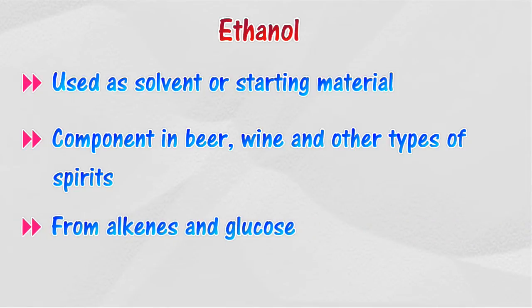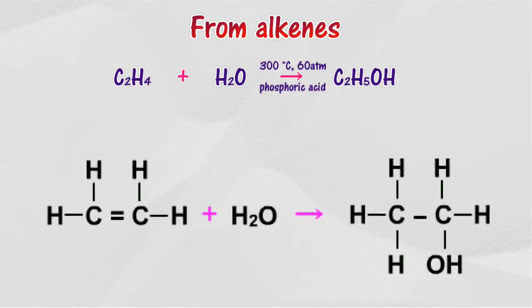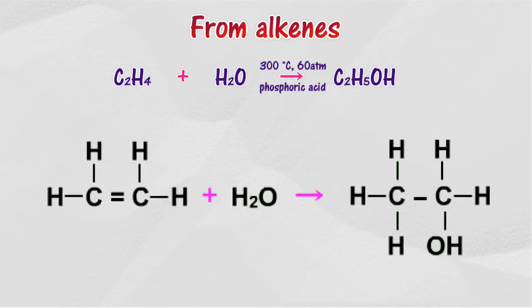The industrial synthesis of ethanol can be done from alkenes and from glucose by fermentation. In the industry, ethanol is produced through the addition reaction, or the hydration of ethylene. In this reaction, a mixture of ethylene vapor and steam is flowed through phosphoric acid at a temperature of 300 degrees Celsius and compressed under a pressure of 60 atmospheres.